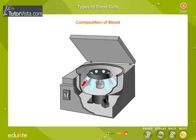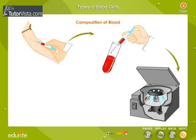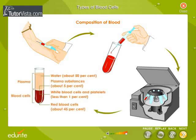Let us understand the method of finding out the composition of blood. Collect a sample of blood and transfer it into sterilized test tubes. Centrifuge the blood samples and observe the separated components under a microscope to study the composition of blood.